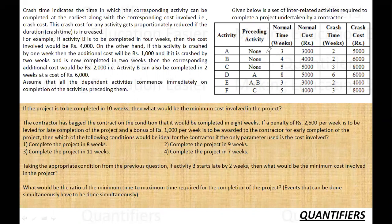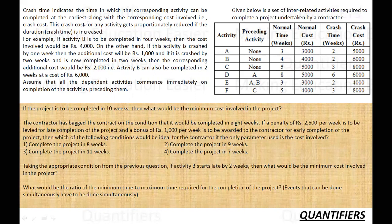There's a box showing interrelated activities required to complete a project undertaken by a contractor. The contractor has activities A, B, C, D, E, F, and so on. Crash time indicates the time in which the corresponding activity can be completed at the earliest, along with the corresponding cost. For example, activity A can normally be done in 3 weeks but the crash time is 2 weeks, and the cost increases from 3,000 to 5,000. Activity B can be completed in 4 weeks at 4,000, and if crashed by 2 weeks, the additional cost is 2,000.